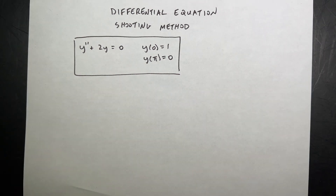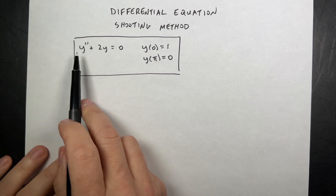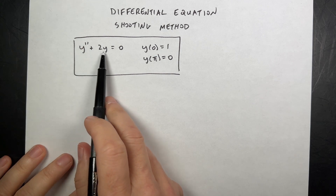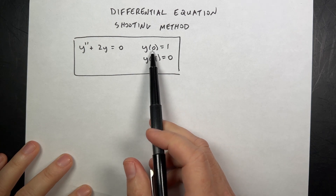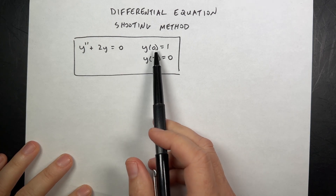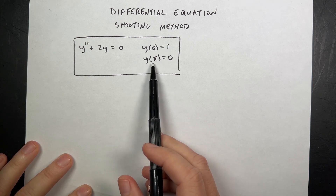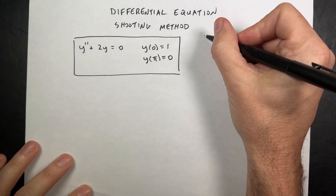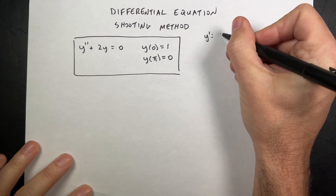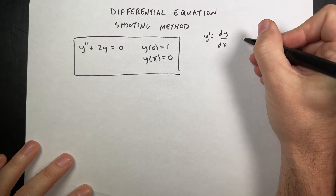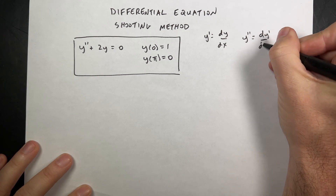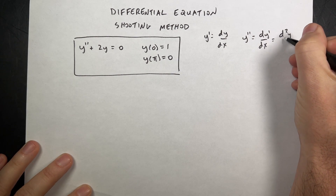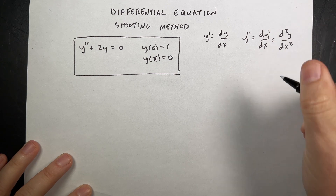So we're going to solve this equation. We have y double prime plus 2y equals 0. And then we have the boundary conditions that y at x equals 0 is 1, and y at x equals pi is 0. We're going to use y prime as the derivative of y with respect to x, and y double prime as the second derivative of y with respect to x. That's just the notation we normally use.